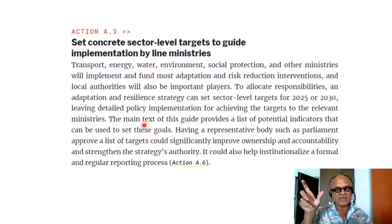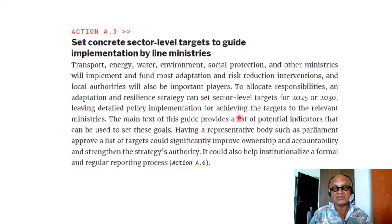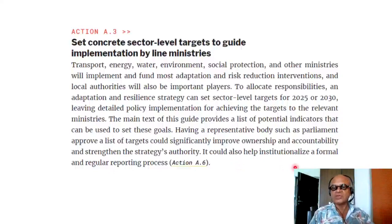Projections beyond 2050, I think, are pointless — they are uncertain and it's very hard to make decisions based on them. These are the timescales at which actual investment can be made and progress monitored. If we are not on target for net zero and decarbonization by 2040–2050, then we should worry about just that instead of what will happen in 2080 or 2100. Having a representative body such as Parliament approve a list of targets could significantly improve ownership, accountability, and the strategy's authority, and help institutionalize formal reporting.